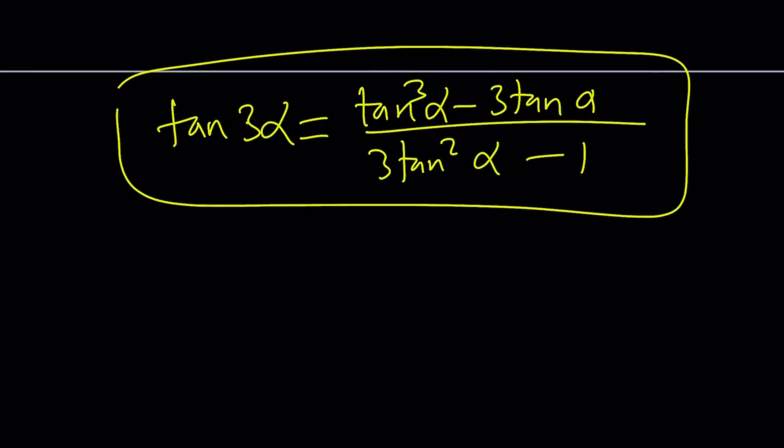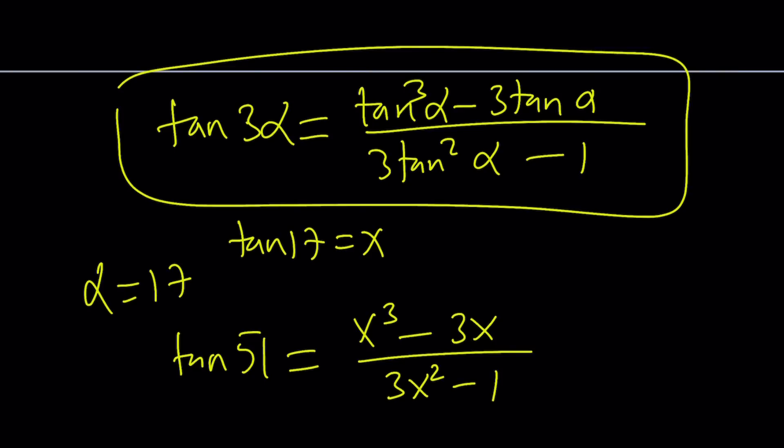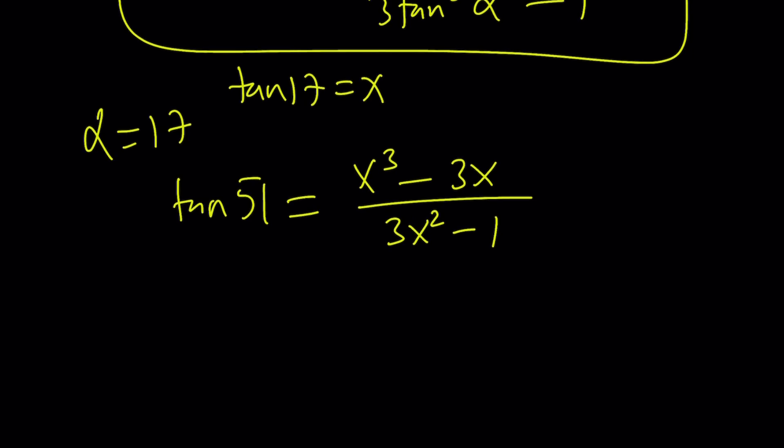And guess what we're going to do? We're going to replace alpha with 17 and that's going to give us tangent 51. Tangent cubed alpha. Remember tangent alpha or tangent 17 was x. So it's going to be x cubed minus 3x over 3x squared minus 1. Great.